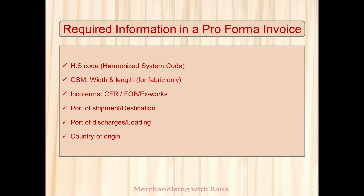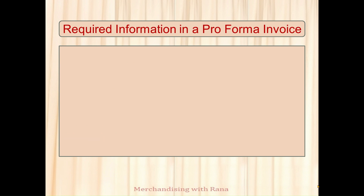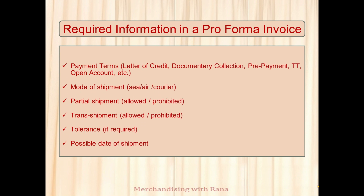Country of origin must be mentioned — for example, if goods are from China, 'country of origin: China' should be in the PI. Payment terms — whether LC or TT — must be stated. Mode of shipment — whether by sea, air, or courier for small quantities — should be mentioned. Partial shipment allowed or not allowed should be stated. Tolerance should also be mentioned, typically plus or minus five percent or three percent, since finished goods quantity may vary due to waste. The expected date of shipment should be confirmed in the PI.